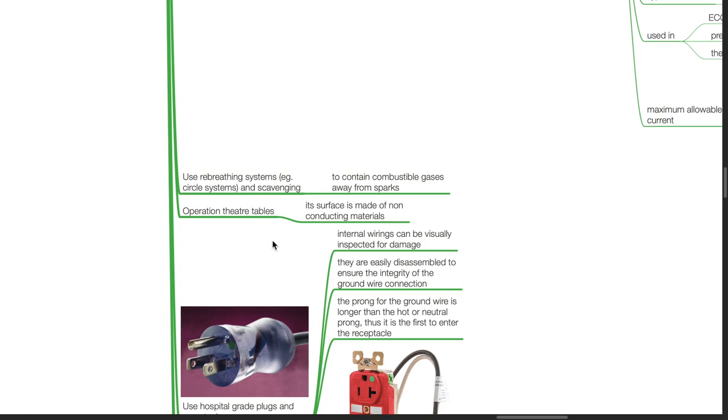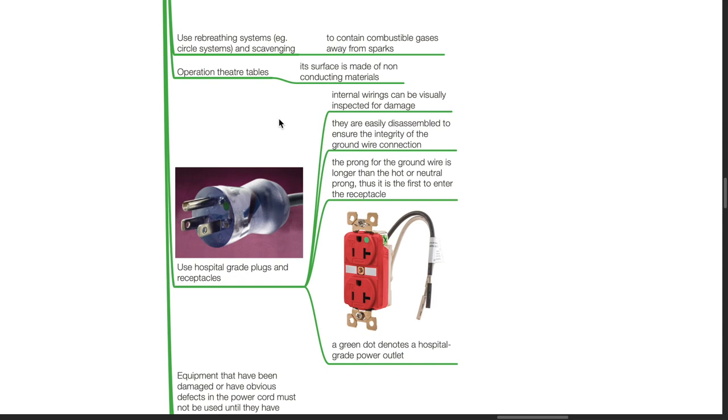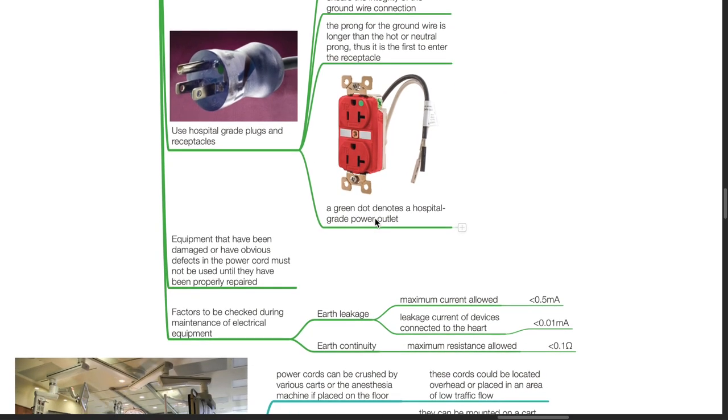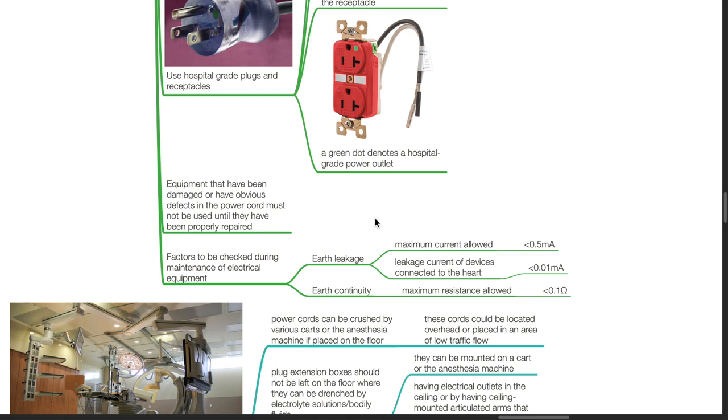We should use rebreathing systems such as circle systems and scavenging to contain combustible gases away from sparks. Operation theater tables should have non-conducting surfaces. Use hospital grade plugs and receptacles where internal wirings can be visually inspected for damage and easily disassembled to ensure integrity of ground wire connection. The prong for the ground wire is longer, so it enters the receptacle first. A green dot denotes a hospital grade power outlet. Equipment with damaged power cords must not be used until properly repaired. Factors to be checked during maintenance include earth leakage with maximum current less than 0.5 milliamps, or less than 0.01 milliamps for devices connected to the heart, and earth continuity with maximum resistance less than 0.1 ohms.